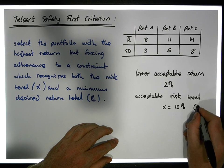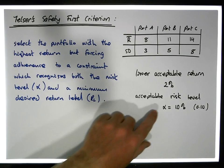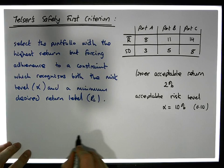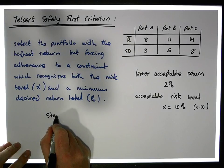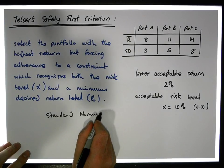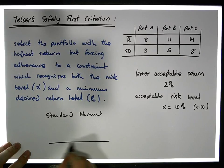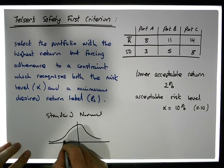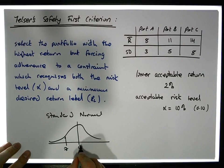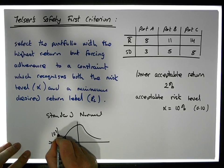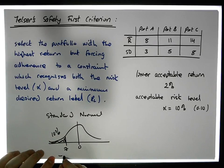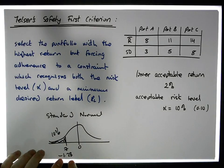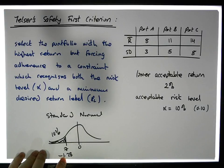From a standard normal curve perspective, we know that the z-score that has 10% of the area to the left-hand side is actually minus 1.28. We calculated that in a previous video when looking at Roy's criterion and Kataoka's criterion.